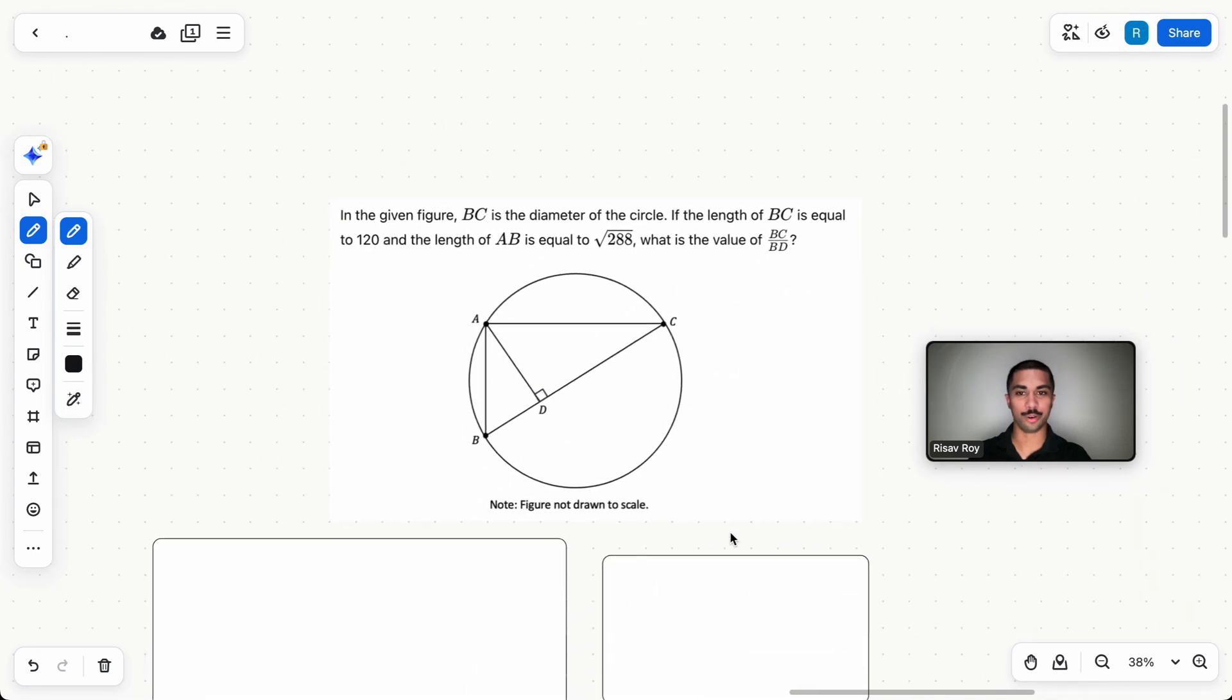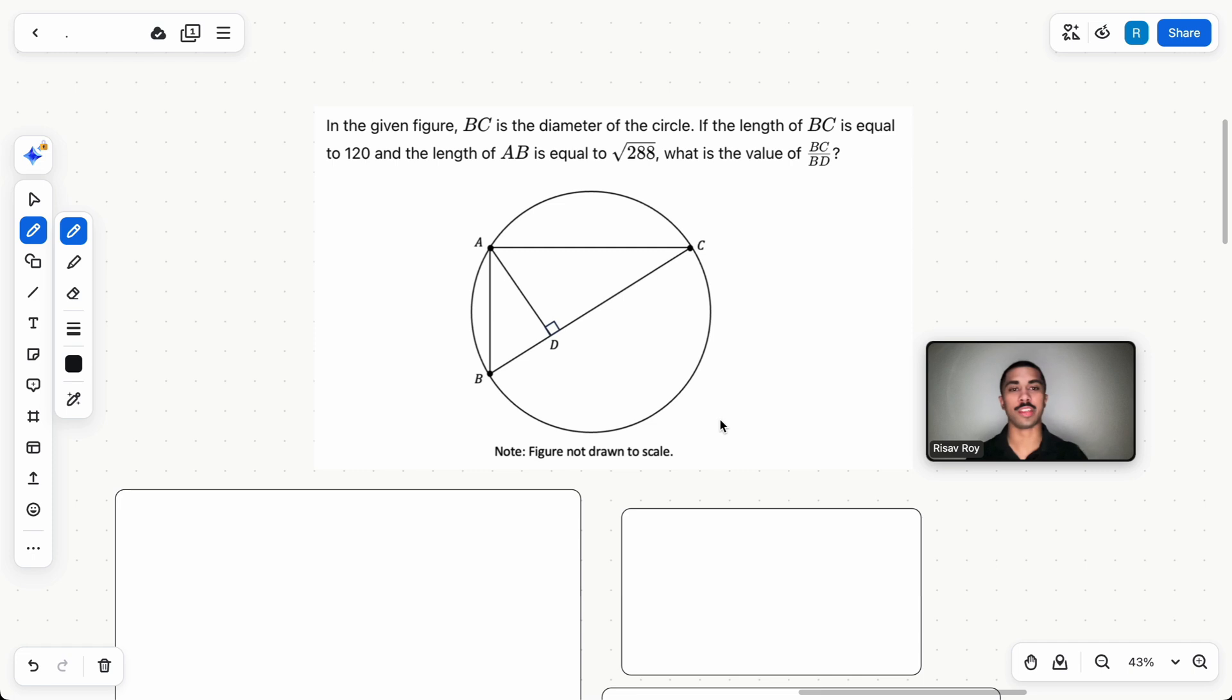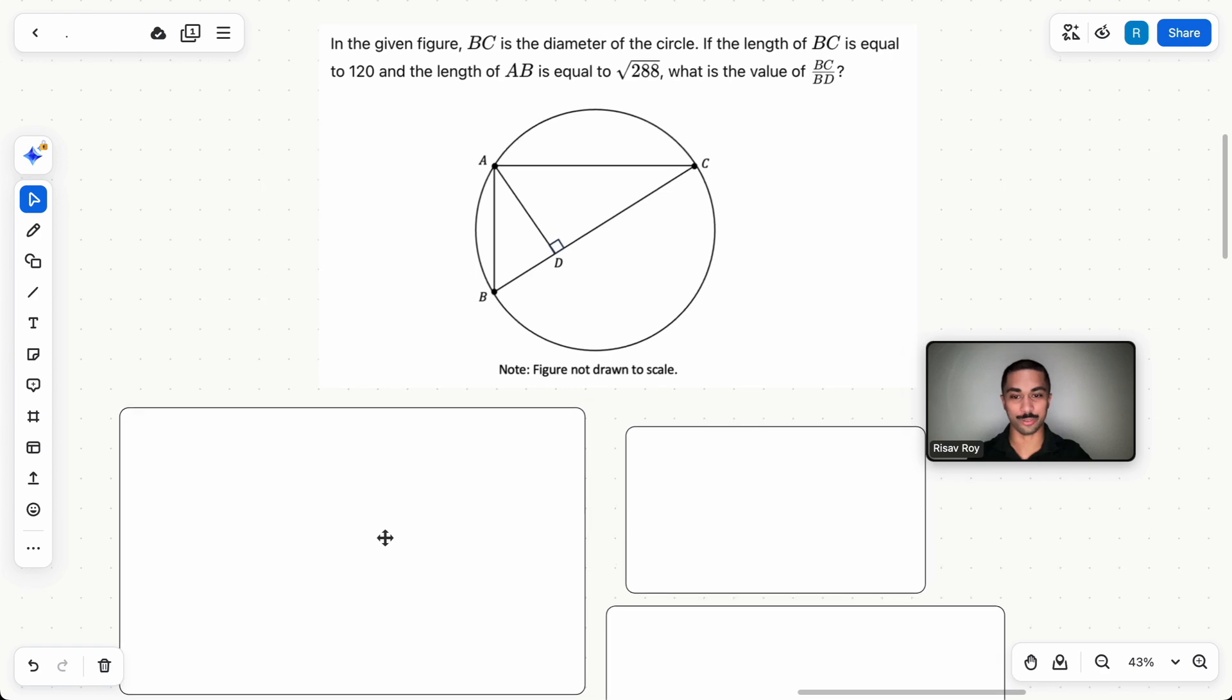Okay, question number three. In the given figure, BC is the diameter of the circle. If the length of BC is equal to 120 and the length of AB is equal to √288, what is the value of BC over BD? I know this isn't technically completely a circle problem, but it's a circle and a triangle problem. So I'm just including it because it's pretty important. It's still complicated. It's still one of the hardest questions that you'll see.